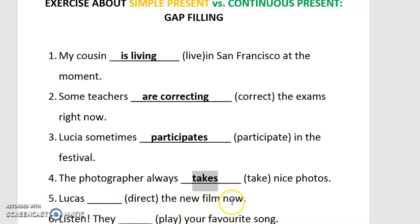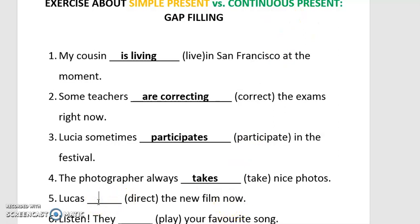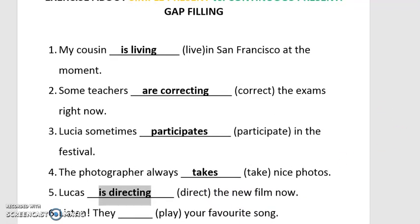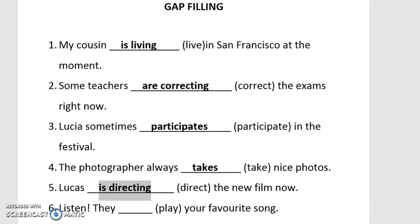Number five: 'Lucas __ the new film now' — 'Lucas dirigir la nueva película ahora.' The time expression 'now' tells us this is continuous present. Lucas is third person singular, so the answer is 'is directing.' 'Lucas is directing the new film now' — 'Lucas está dirigiendo la nueva película ahora.' It's happening now.